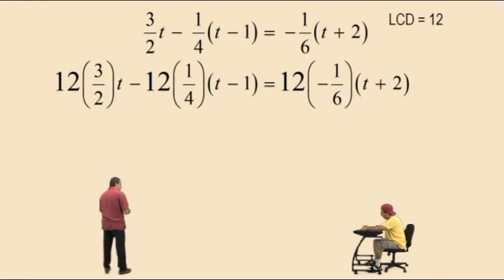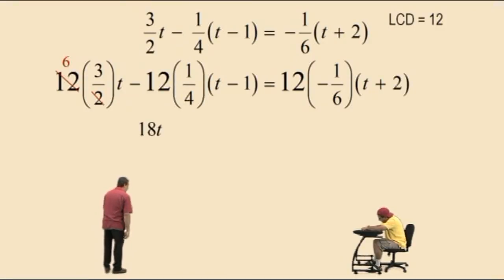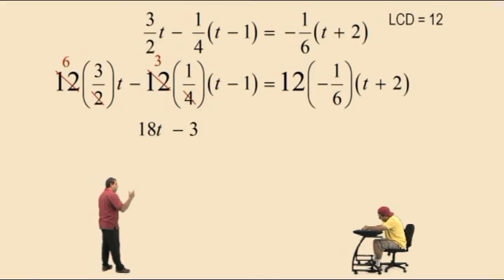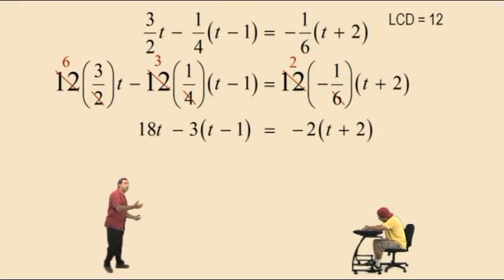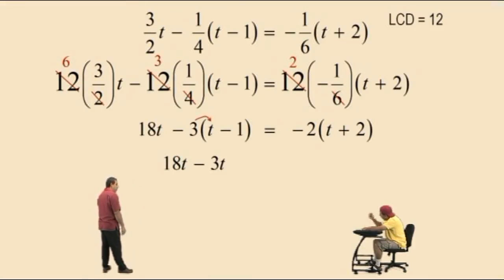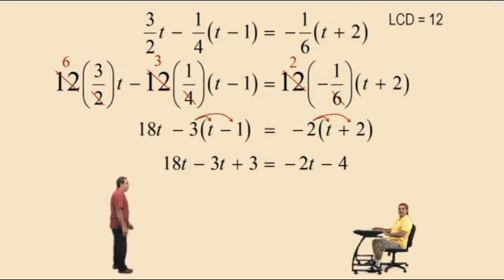Okay, here we go — here's our clearing fractions technique. Twelve divided by two is what? Six. And six times three? Eighteen — so it's eighteen t. Now bring down your subtraction. Next one: twelve divided by four is what, Charlie? Three. Three times one is three. But that has to be multiplied to the quantity t subtract one — we'll distribute in the next step. Now on the right-hand side, twelve divided by six is what? Two. And two times negative one is what, Charlie? Negative two. But that has to be distributed to the quantity t plus two in the next step. So here we go, Charlie — we have eighteen t. Negative three times t is negative three t. Negative three times negative one is positive three. Very nice. Negative two times t is negative two t. And negative two times positive two is negative four.